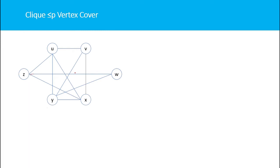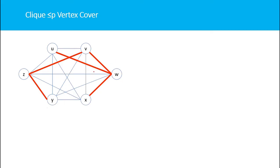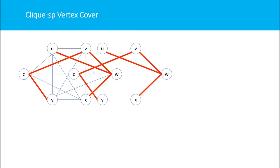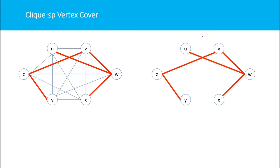Now we find the complement of this graph by adding edges that do not belong to it. The new edges are: VW, VZ, WU, ZY, and XW — these are marked in red and do not belong to the original graph. Extracting these gives us G-bar, the complement graph.